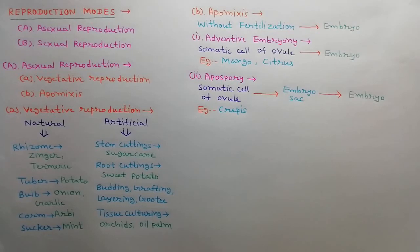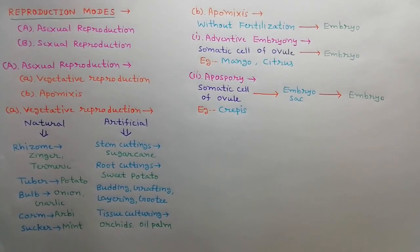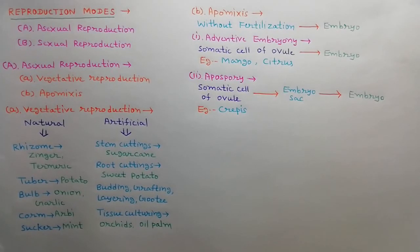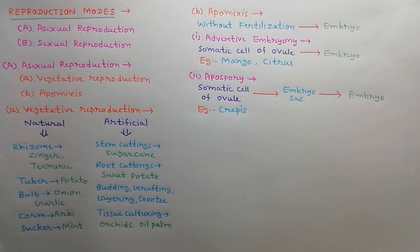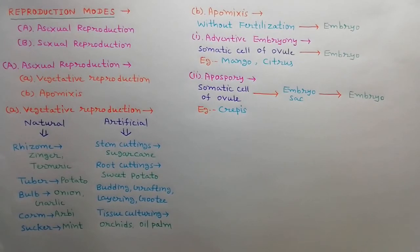The second type is apospory. When the embryo sac is developed from any somatic cell of the ovule without meiosis, it is called apospory. This means the megaspore is not formed and each cell of the embryo sac is diploid. The embryo is developed from any cell of the embryo sac. For example, in Hieracium plant.